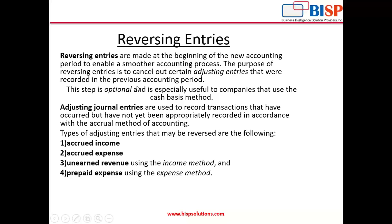This step is optional and especially useful to companies that use the cash basis method. Basically, adjusting entries which are made at the end of the accounting period are simply reversed in the next period. The purpose is to cancel out certain adjusting entries that were recorded in the previous accounting period.